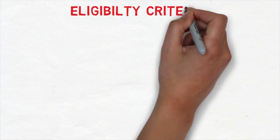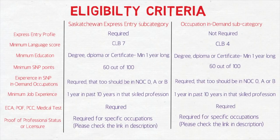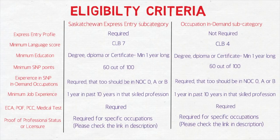Let's start with the eligibility criteria. An Express Entry profile is required for the Saskatchewan Express Entry subcategory, as the name suggests. However, for the Occupation in Demand subcategory, it is not required — so you don't need to be in the Express Entry pool. The minimum language score is CLB 7 for Saskatchewan Express Entry and CLB 4 for Occupation in Demand — a massive difference. So anyone with weaker English or French skills can go for the Occupation in Demand subcategory.